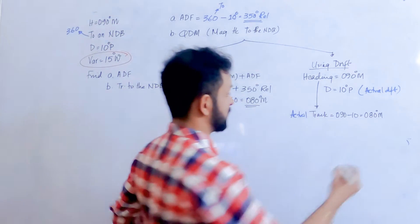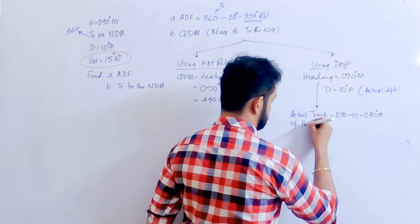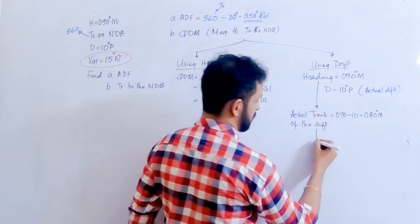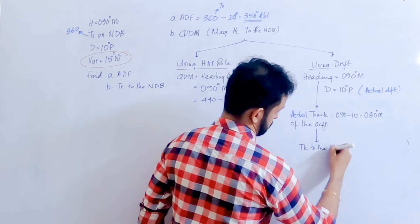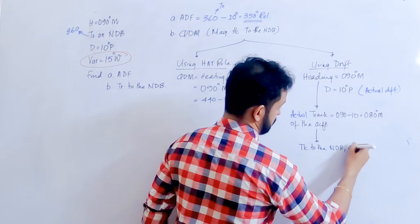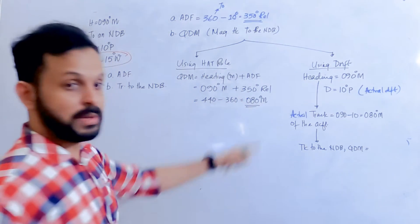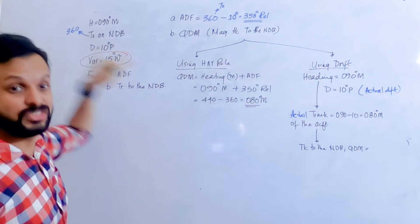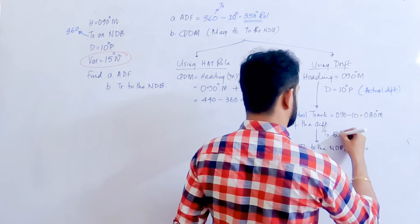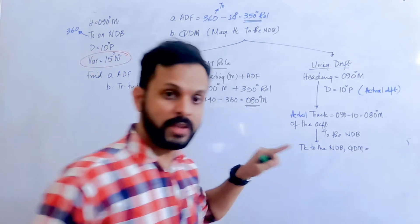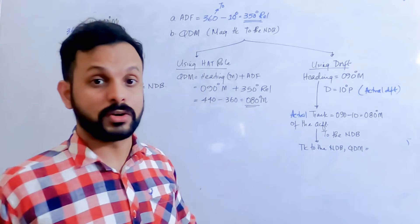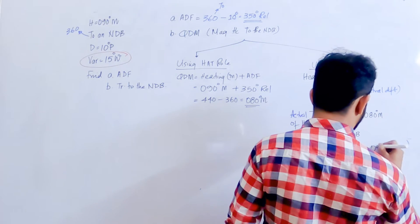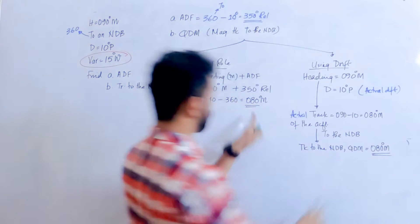The track of the aircraft is 080 degrees. You are asked to find the track to the NDB, which is QDM. Since we are moving to the station, the track of the aircraft equals the track to the station. Therefore, track to the NDB is also 080 degrees.